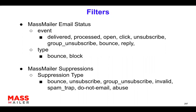The email status object captures events. When you send out an email, you may get events such as processed, delivered, open, click, unsubscribe, group unsubscribe, bounce, and reply. There is also a type field — if you get a bounce, it can be a hard bounce or a soft bounce. If the type field value is 'bounce,' it's a hard bounce. If the type field value is 'block,' it is actually a soft bounce. We also have a formula field to identify hard vs. soft bounce.